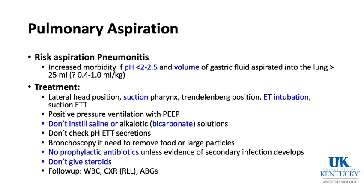Pulmonary aspiration is the next keyword. The risk of aspiration pneumonitis goes up as the pH of the gastric fluid goes down and as the volume goes up. If the pH is less than two to two and a half and the volume of gastric fluid is high, the chance of full-blown Mendelson syndrome or aspiration pneumonitis goes up. The classic threshold volume was approximately 0.4 mL per kilogram, though there is debate about the volume associated with pneumonitis.